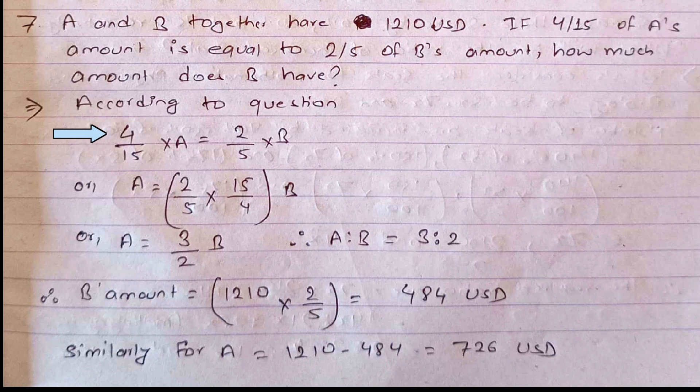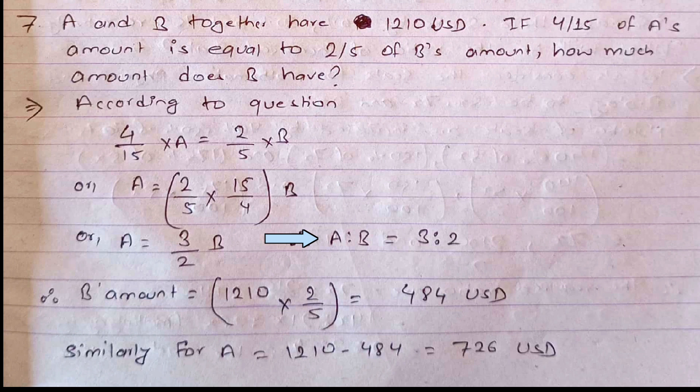From the question we can write: (4/15) × A = (2/5) × B. We need to solve for A. By cross multiplication, A = (2/5) × (15/4) × B, which simplifies to A = (3/2) × B. Therefore we can write the ratio A : B = 3 : 2. So the ratio between A and B's total amount is 3 : 2.